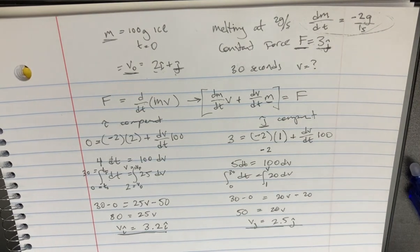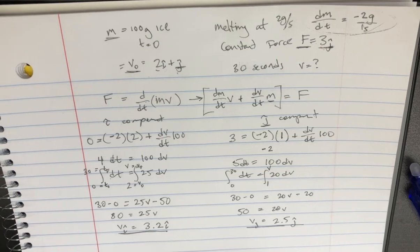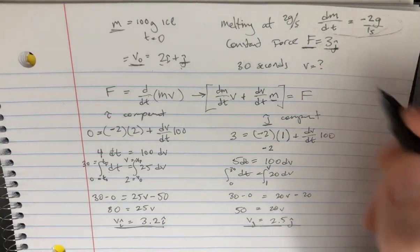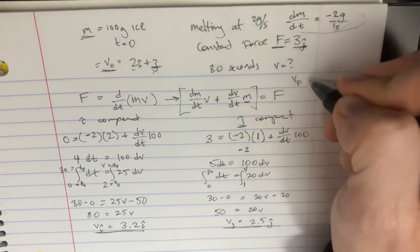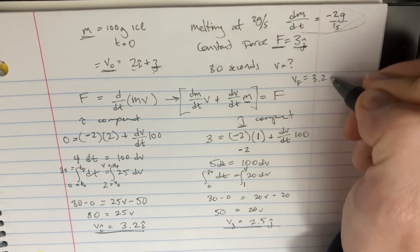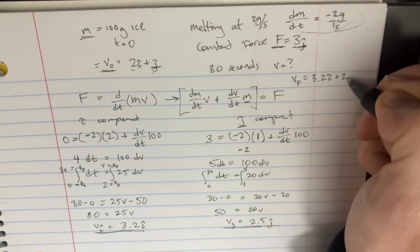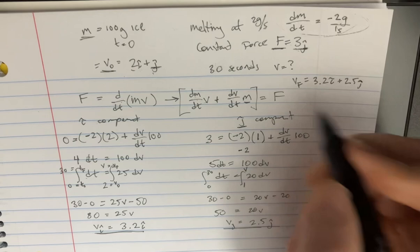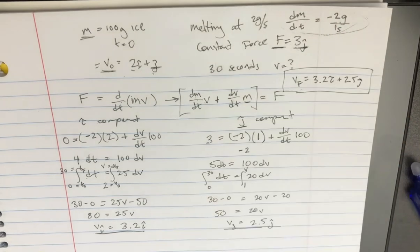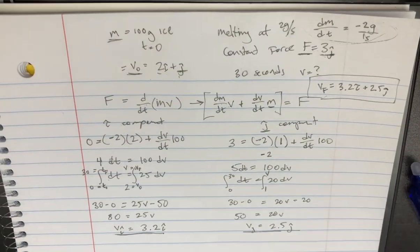And this is for the end. So basically, yeah, we've just discovered that the velocity of the final vf is supposed to be like 3.2i plus 2.5j. So that's pretty cool. Interesting differential equation.